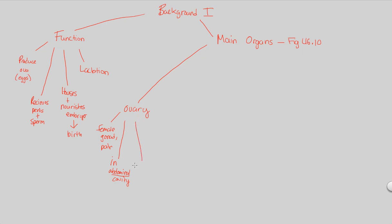Because the ovary is an internal structure, it has to be held in place — it can't just float around. It is specifically held in place strongly by ligaments, which ensure that the ovaries aren't bouncing around inside the body. That's another difference we see between male and female reproductive anatomy.